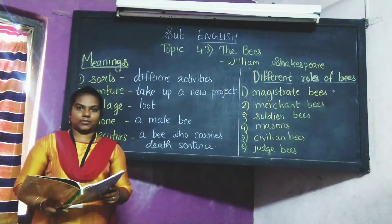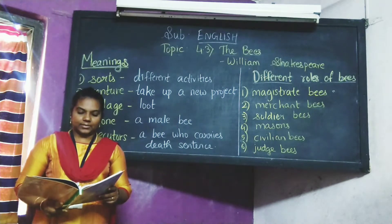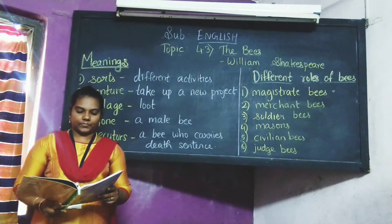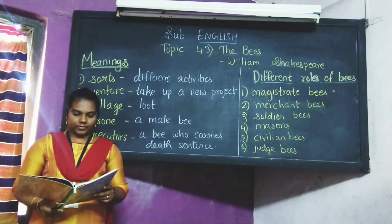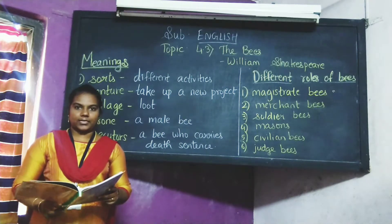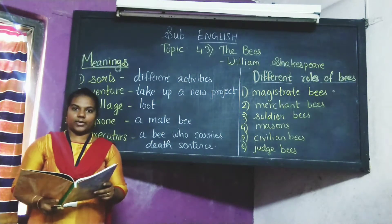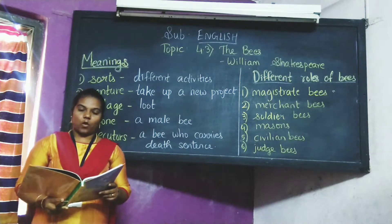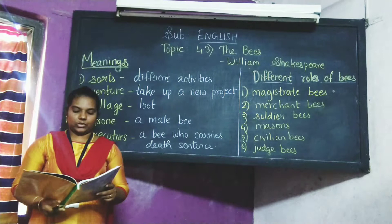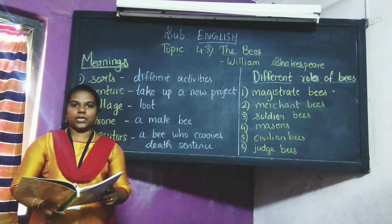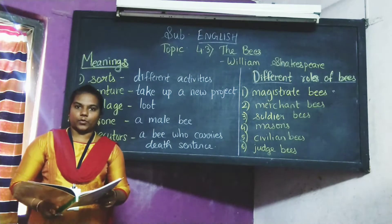The singing masons building roofs of gold. The civil citizens kneading up the honey. The poor mechanic porters crowding in their heavy burdens at the narrow gate. The sad-eyed justice, with his surly hum, delivering over to executors' pale the lazy yawning drone. By William Shakespeare.